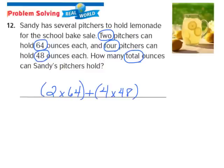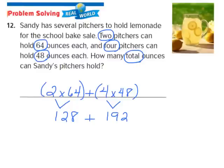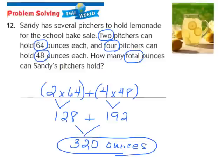Using the order of operations, I perform what's in parentheses first. I start with 2 times 64, which gives me 128. Then I multiply 4 times 48, which gives me 192. I drop down my addition sign and add 128 plus 192 together, which gives me 320. Sandy's pitchers can hold 320 ounces total. I've evaluated that expression following the order of operations.